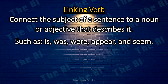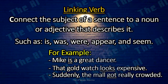The linking verb. Linking verbs connect the subject of a sentence to a noun or adjective that describes it, such as is, was, were, appear, and seem. For example: Mike is a great dancer. That gold watch looks expensive. Suddenly, the mall got really crowded.